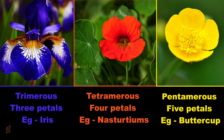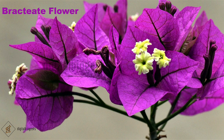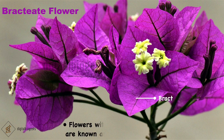Based on the number of petals, flowers can be divided into trimerous (three petals, e.g., iris), tetramerous (four petals, e.g., nasturtiums), and pentamerous (five petals, e.g., buttercups). Some flowers have modified leaves called bracts at the base of the pedicel — they are often larger and more colorful than the actual petals. Flowers with bracts are called bractate flowers (e.g., bougainvillea, china rose, tulip) — bracts protect delicate flower parts from environmental stress. Flowers without bracts are called ebractate flowers, for example mustard.